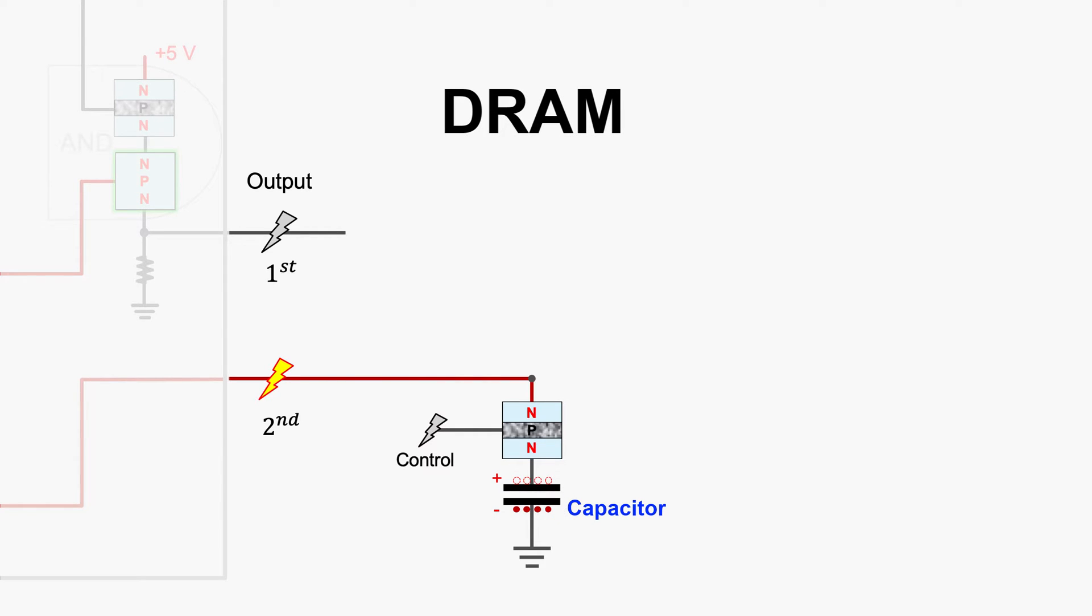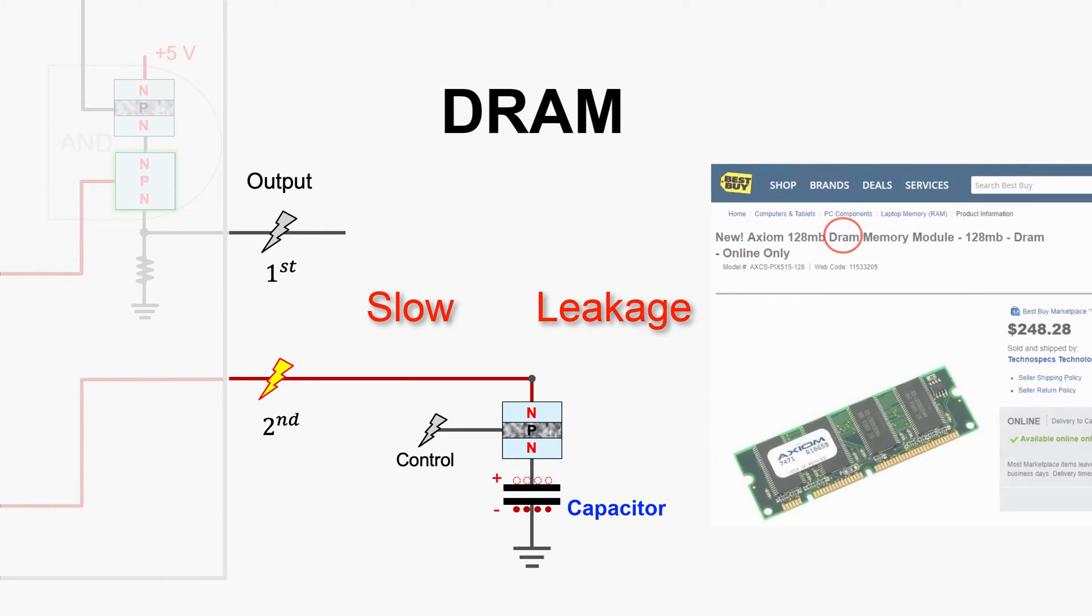This is called dynamic memory, DRAM. It's slow and has leakage problem. But they are inexpensive, as you can get from Best Buy.